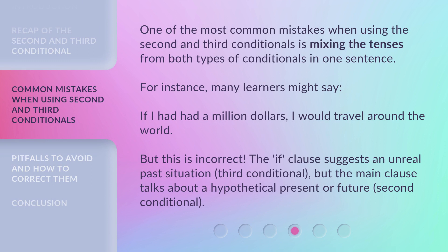One of the most common mistakes when using the second and third conditionals is mixing the tenses from both types of conditionals in one sentence. For instance, many learners might say, 'If I had had a million dollars, I would travel around the world.' But this is incorrect. The if clause suggests an unreal past situation — third conditional — but the main clause talks about a hypothetical present or future — second conditional.